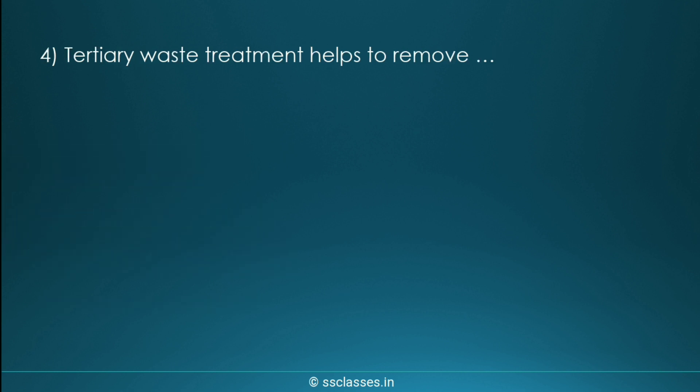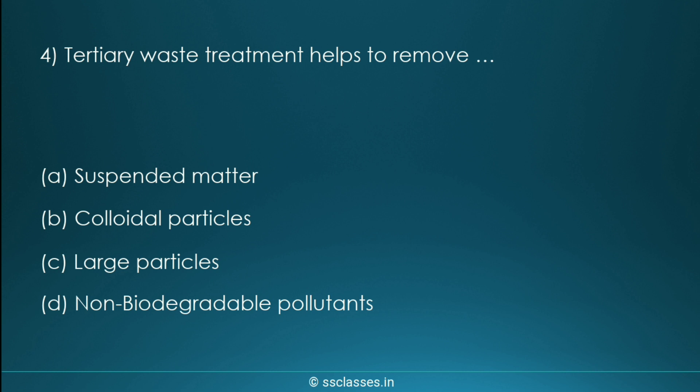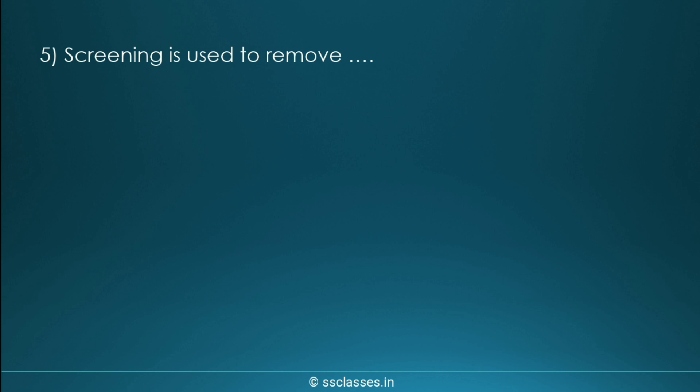Question four: tertiary waste treatment helps to remove which type of impurities? Options are suspended matter, colloidal particles, large particles, or non-biodegradable pollutants. The correct option is the last one — non-biodegradable pollutants. This is a very important step in wastewater treatment.